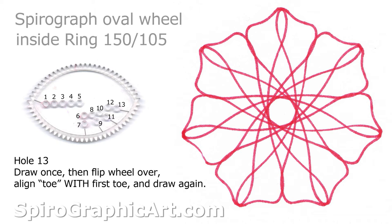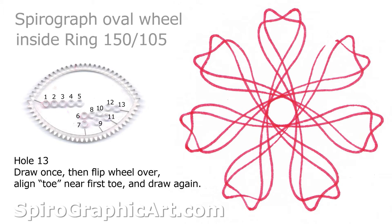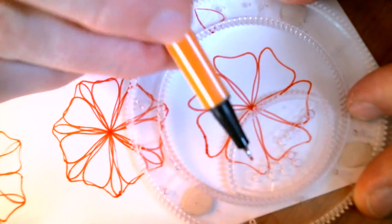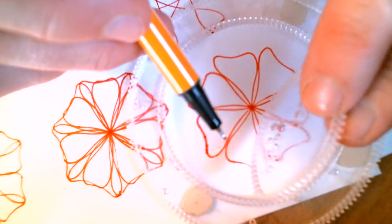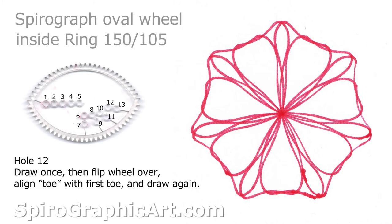So there hole 13. Draw it once, flip the wheel over, and how you align the toe will influence what kind of effect you get. So remember which hole you were using and then you choose where to line it up and you can get different effects depending on how you line up the toes.